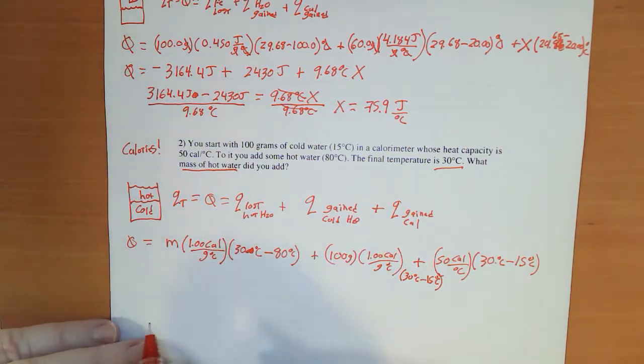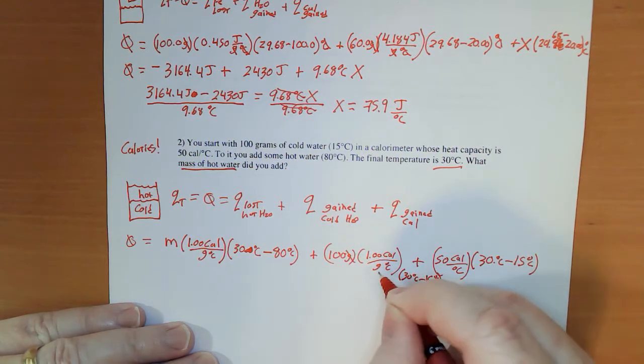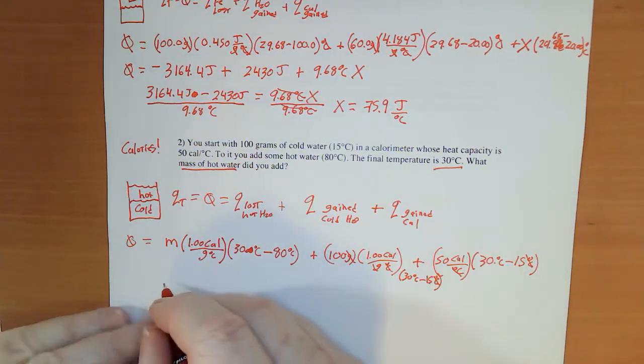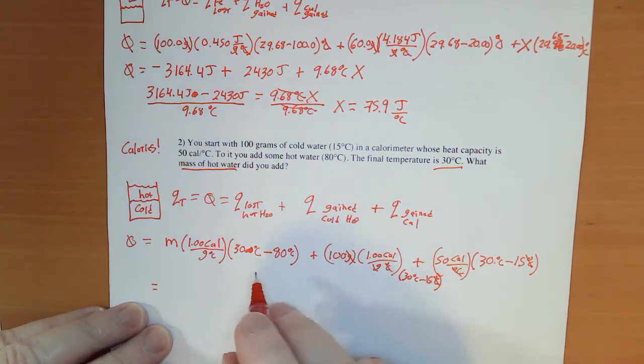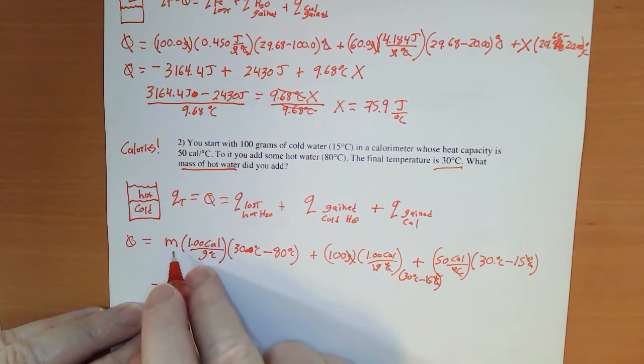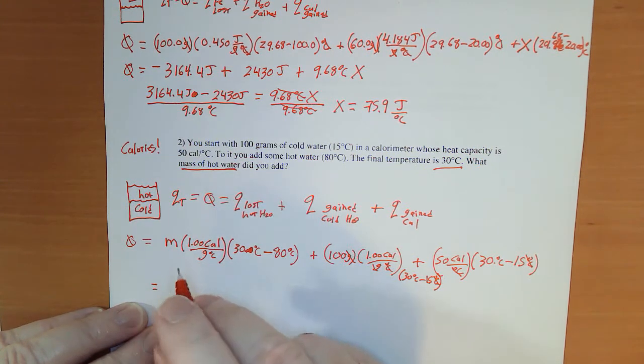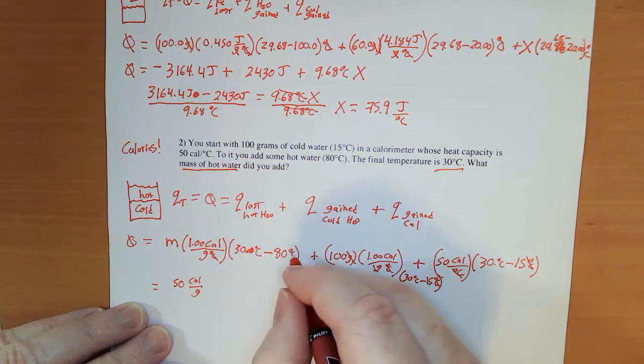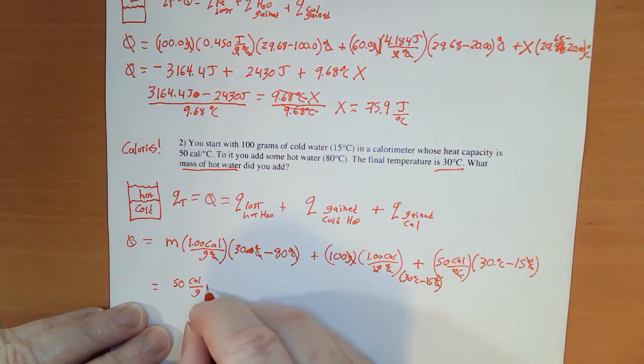Let's clean this up. Grams cancels, degrees cancels, over here degrees cancels. So equals, 30 minus 80 is negative 50, times 1, times M. So that means what I have is 50 calories per gram, because degrees Celsius is canceled, times M with a minus sign - negative 50 calories per gram M.